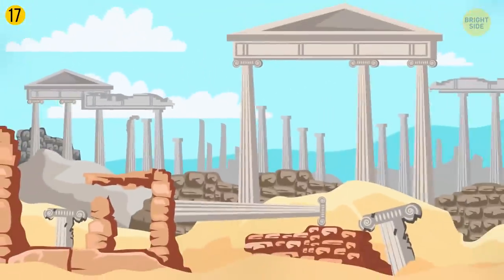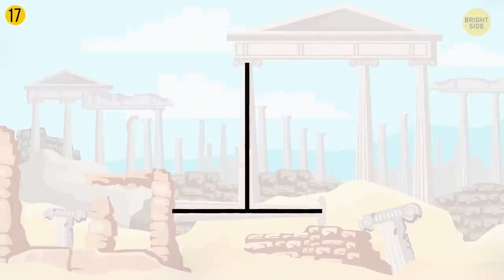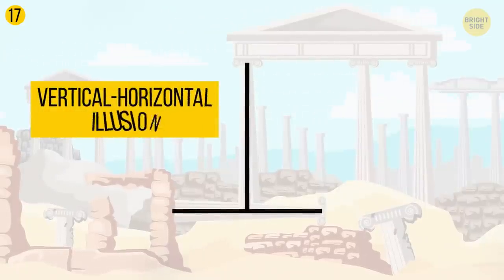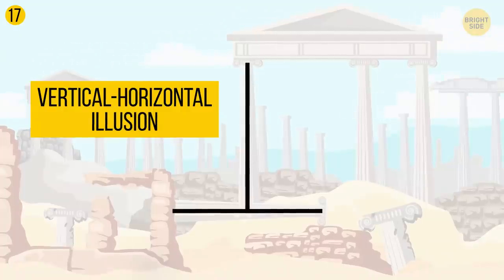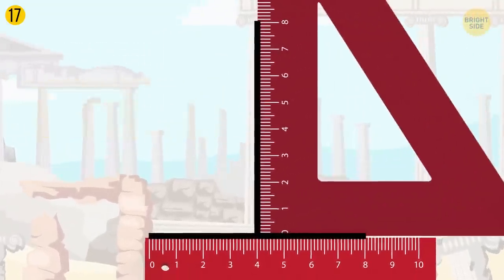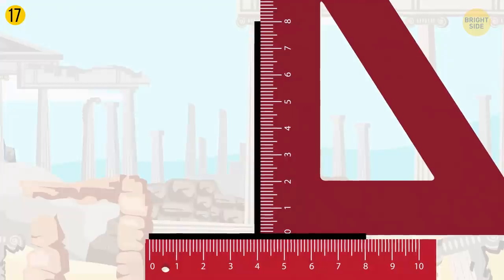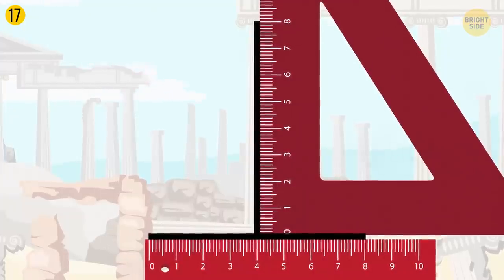When asked, you're likely to say that the vertical line is longer than the horizontal one. But they both are actually of the same length. This is a simple optical illusion called the vertical-horizontal illusion. The way the vertical line is positioned makes your brain believe that it's further from you. And thus, it must be longer than the horizontal line.